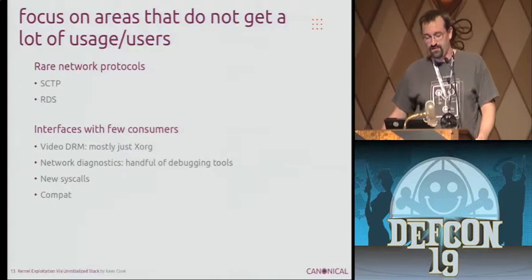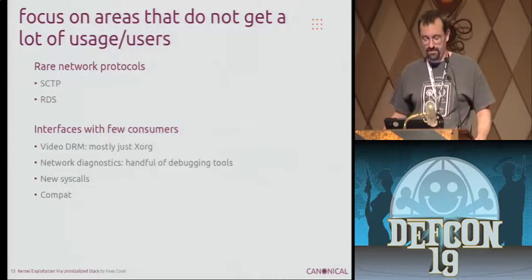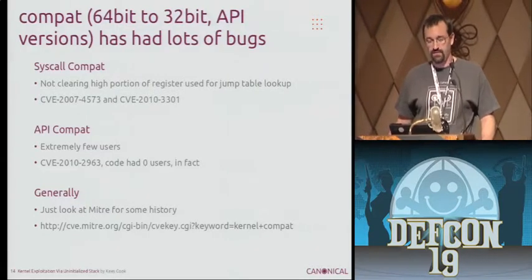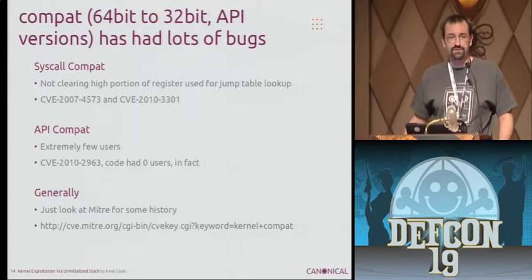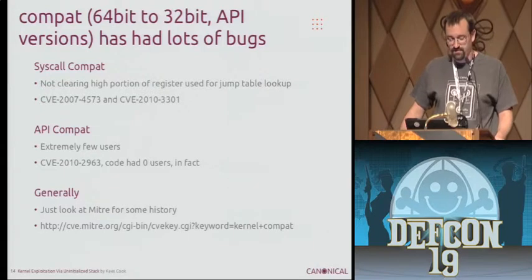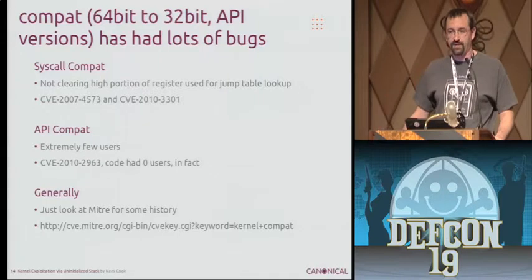I tried to focus on areas that didn't have a lot of usage or users. There have been plenty of vulnerabilities in rare network protocols or interfaces without a lot of consumers — especially compat. When you're dealing with running 32-bit on 64-bit, or different API versions like the Linux video stuff, there are a lot of issues. In fact, the issues are so bad that you have severe problems come back — CVE-2007-4573 and CVE-2010-3301 are the same issue: they just reintroduced it three years later. So what I found was actually a compat interface that had no users because the code could not possibly have ever worked the first time.